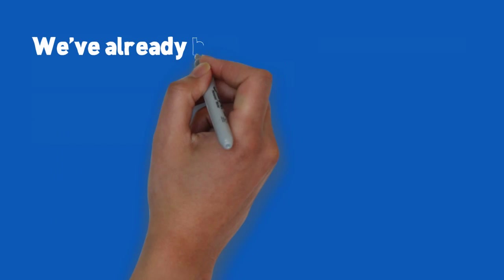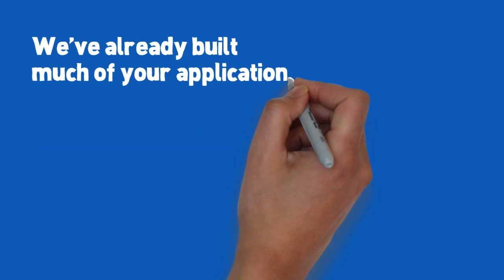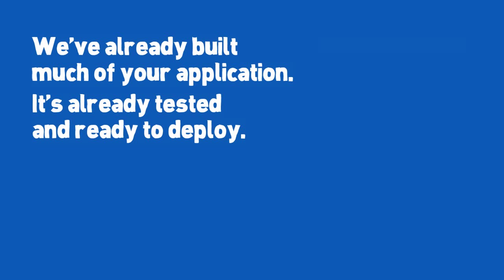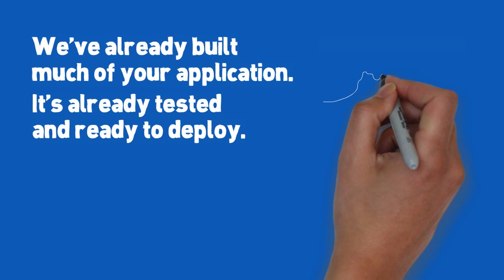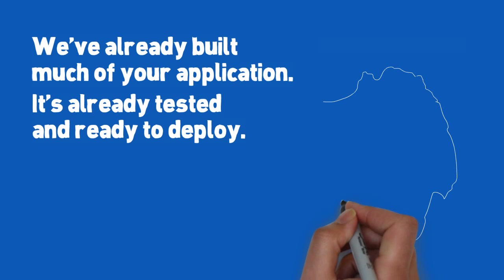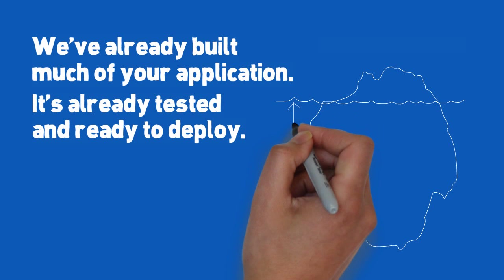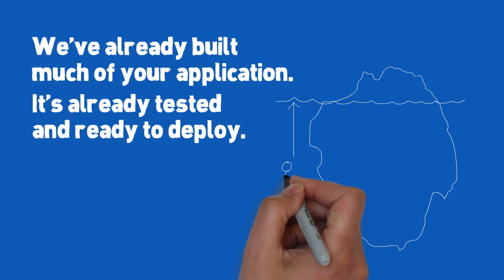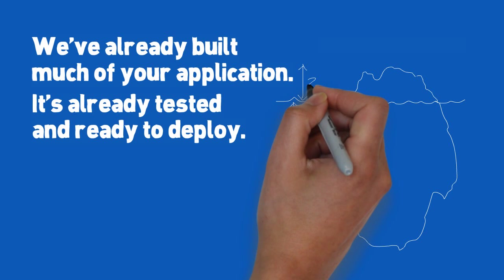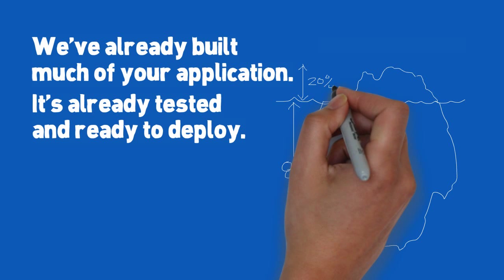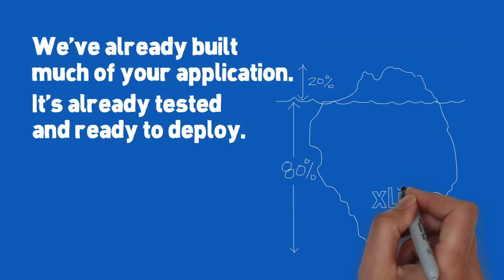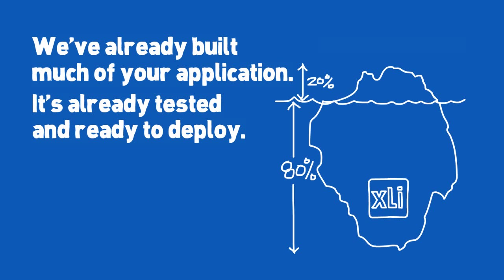Why is this important? What we're saying is that we've already built much of your application, including your server infrastructure. It's tested and it's ready to deploy. Let's use another analogy — an iceberg. We all know 80% of an iceberg floats beneath the water; the only part you can actually see is the 20% above the water. The same is true with XLI: 80% is already done. And with only 20% of the work left to do, it helps you focus on solutions that meet the exact needs of your customers without the risk, expense, and time associated with building from scratch.